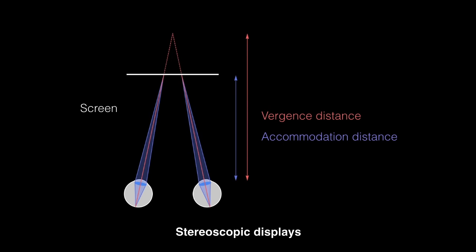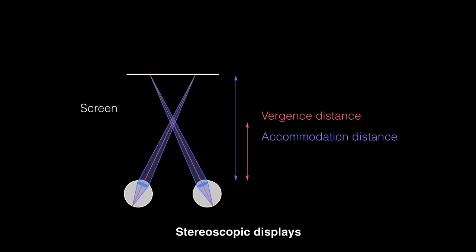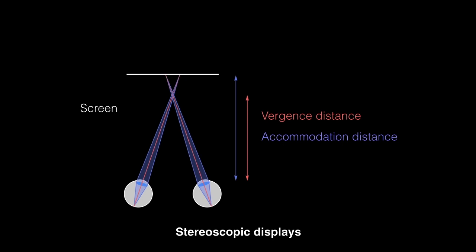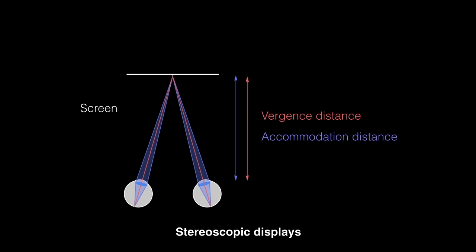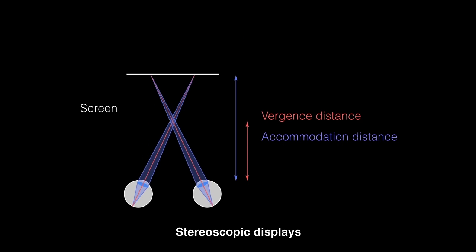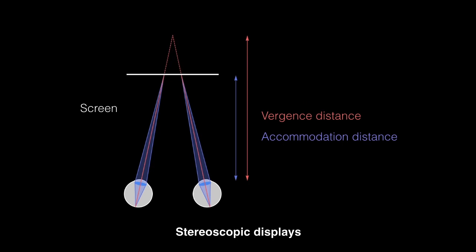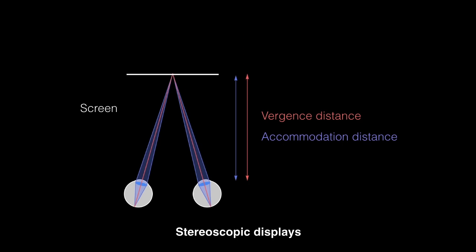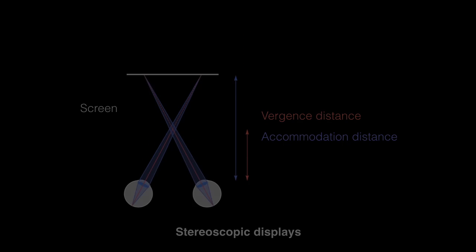Conventional stereoscopic displays use binocular vergence cues to indicate distance, but the viewer must always accommodate to the fixed distance of the screen to create a sharper retinal image. This is a problem because vergence and accommodation are coupled in the brain, so the conflict causes viewer discomfort and fatigue and perceptual distortions.